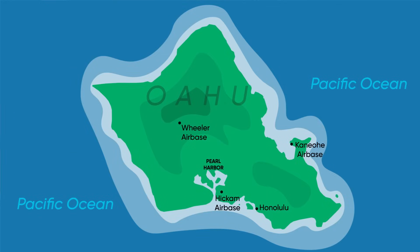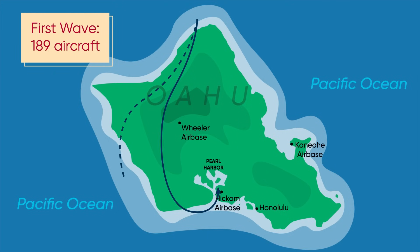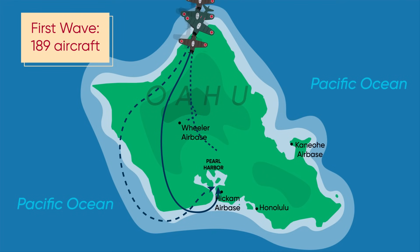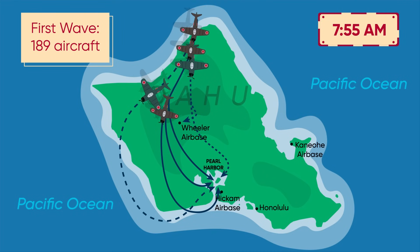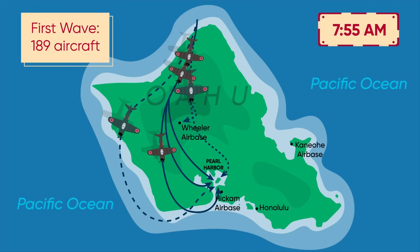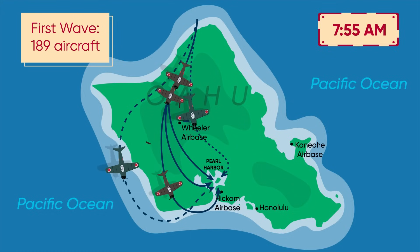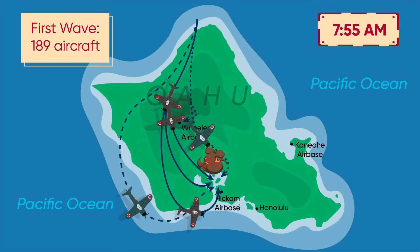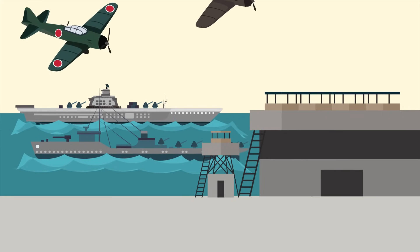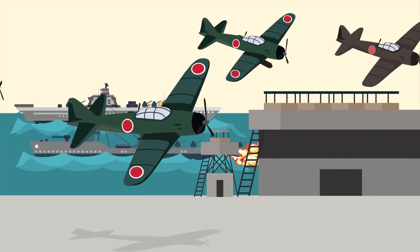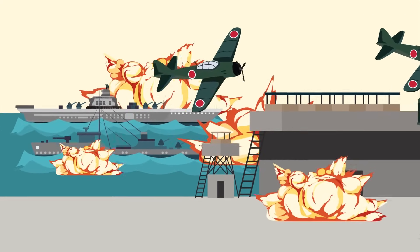From there, 360 planes were launched in two waves. The first wave of 189 aircraft headed towards Pearl Harbor at 7:55 am on December 7th. Heavy bombs and torpedoes were dropped over the naval base, immediately causing heavy damage to the unsuspecting ships. The USS Arizona, along with several battleships, was bombed and exploded in the initial attack.